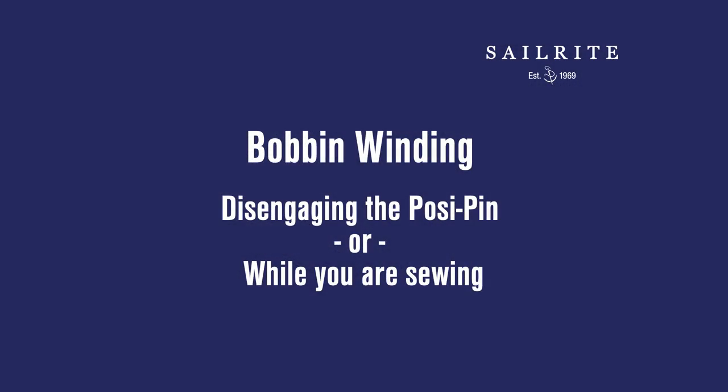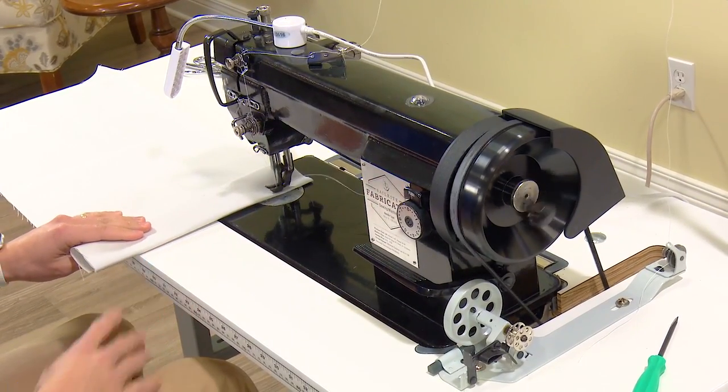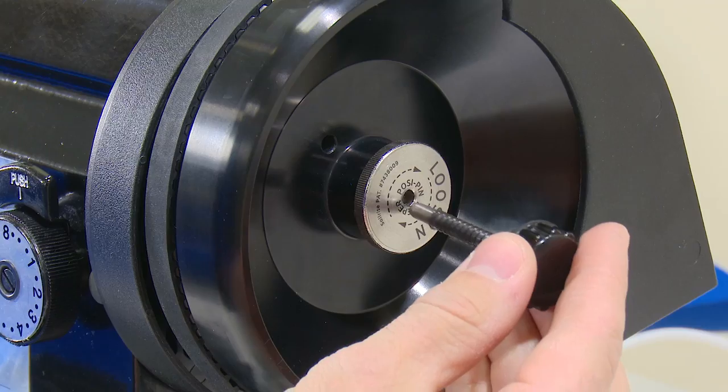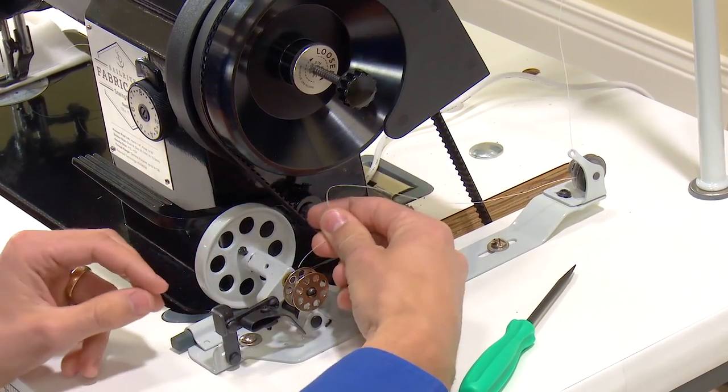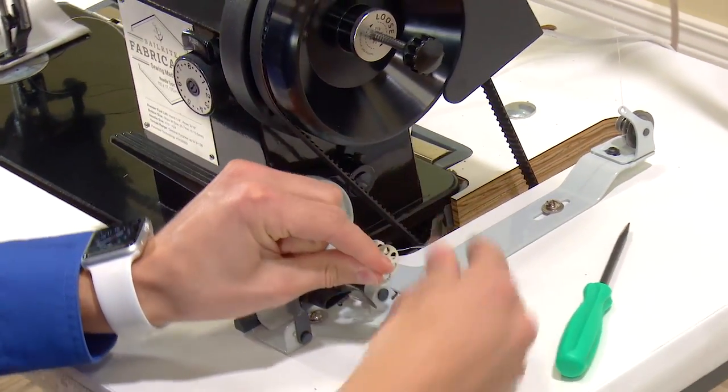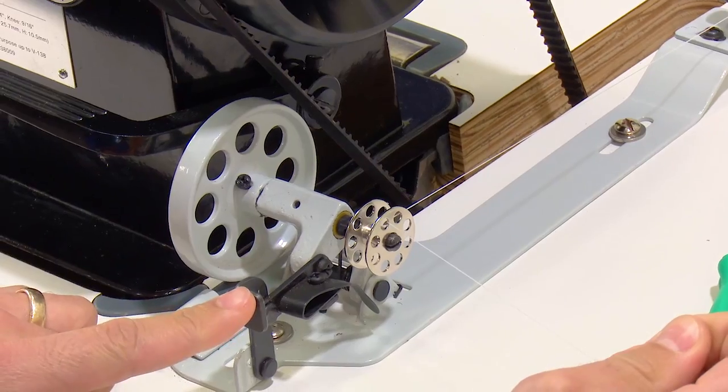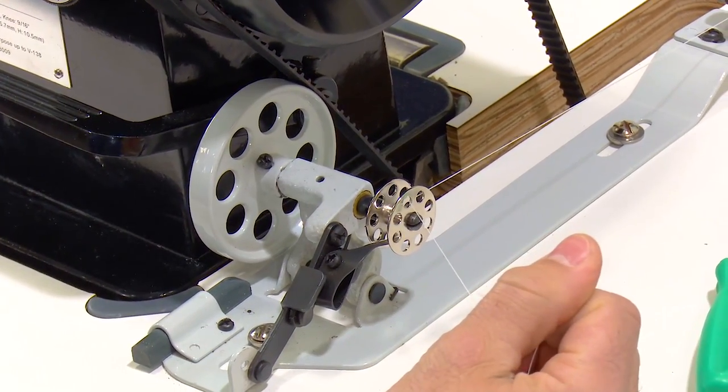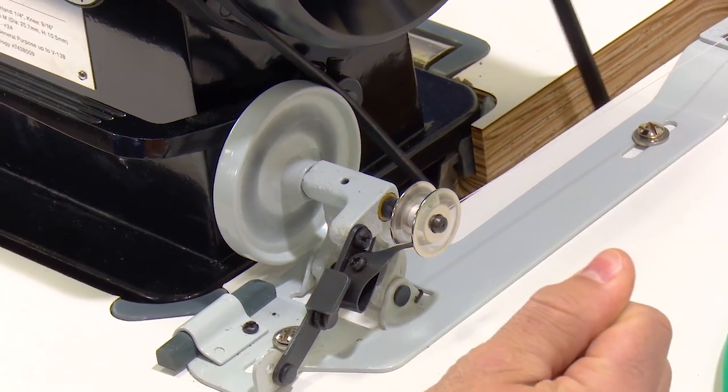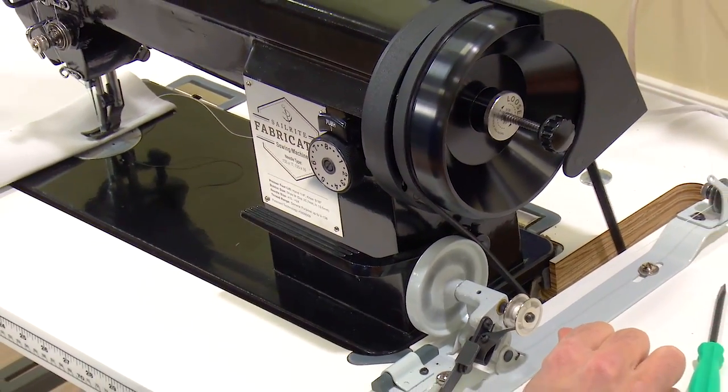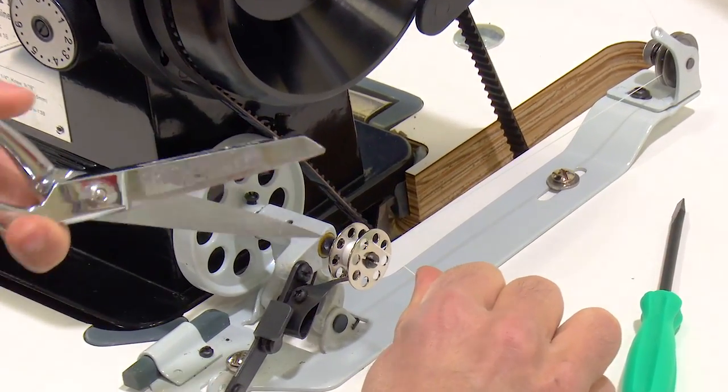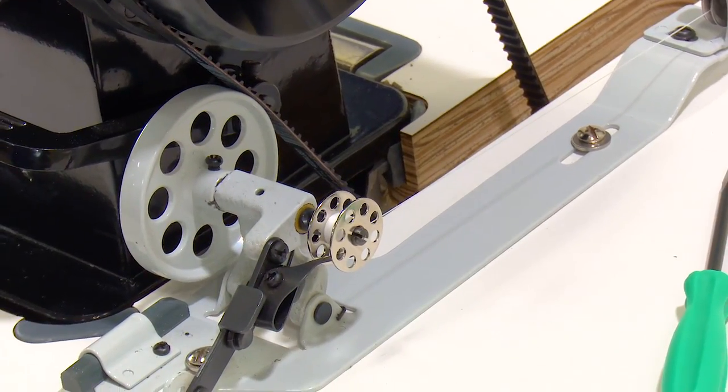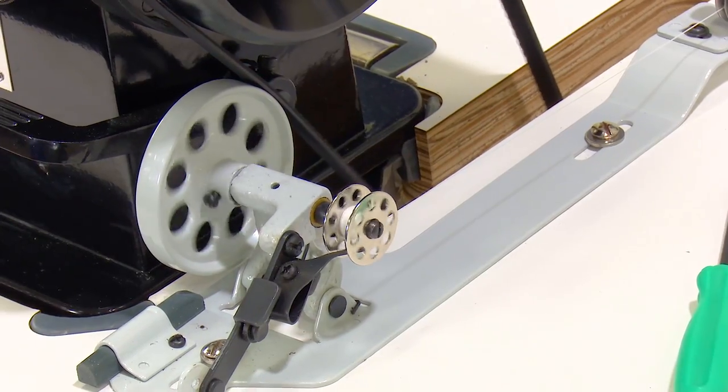Bobbin winding can be done in two ways, disengaging the posi pin or while you're sewing. If you would like to wind bobbins with your sewing machine job still under the needle, but the sewing machine disengaged, simply remove the patented posi pin and now you can wind bobbins with your work still under the needle without the sewing machine sewing. So now when we wind bobbins the balance wheel will spin, our bobbin will wind, but the needle is disengaged. Hold the thread tail and power the machine to wind bobbins. Cut the tail flush with the edge of the bobbin after about twenty rotations or more and then continue under power until the bobbin is full.